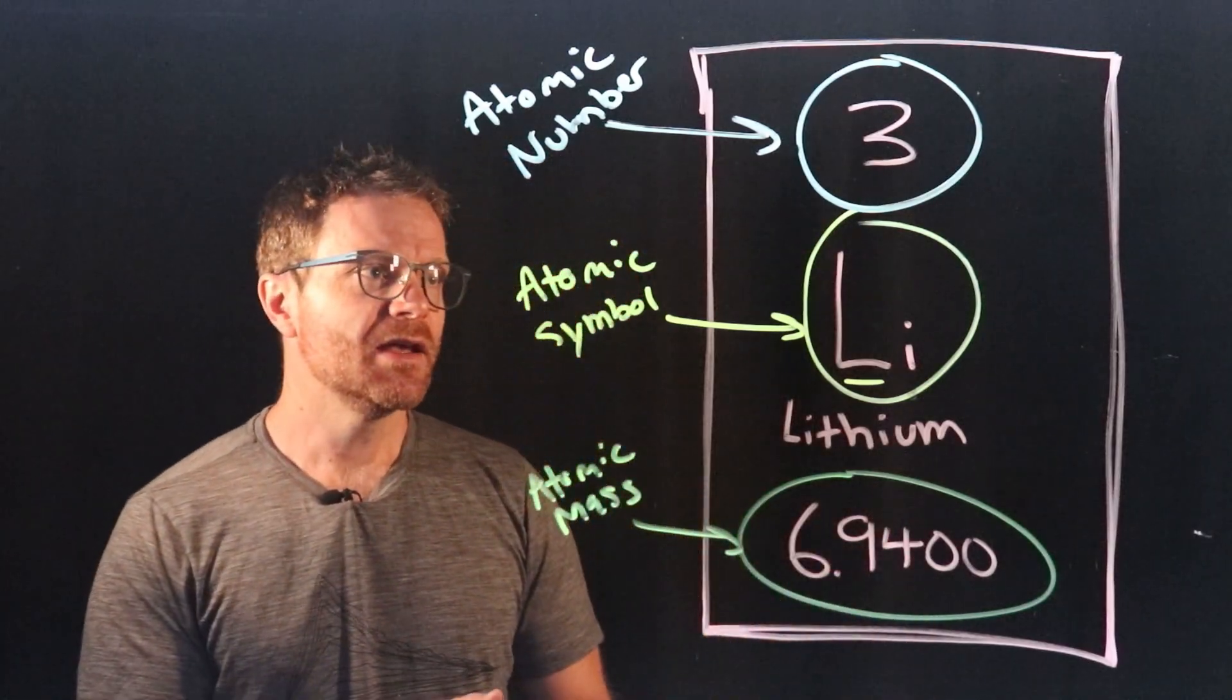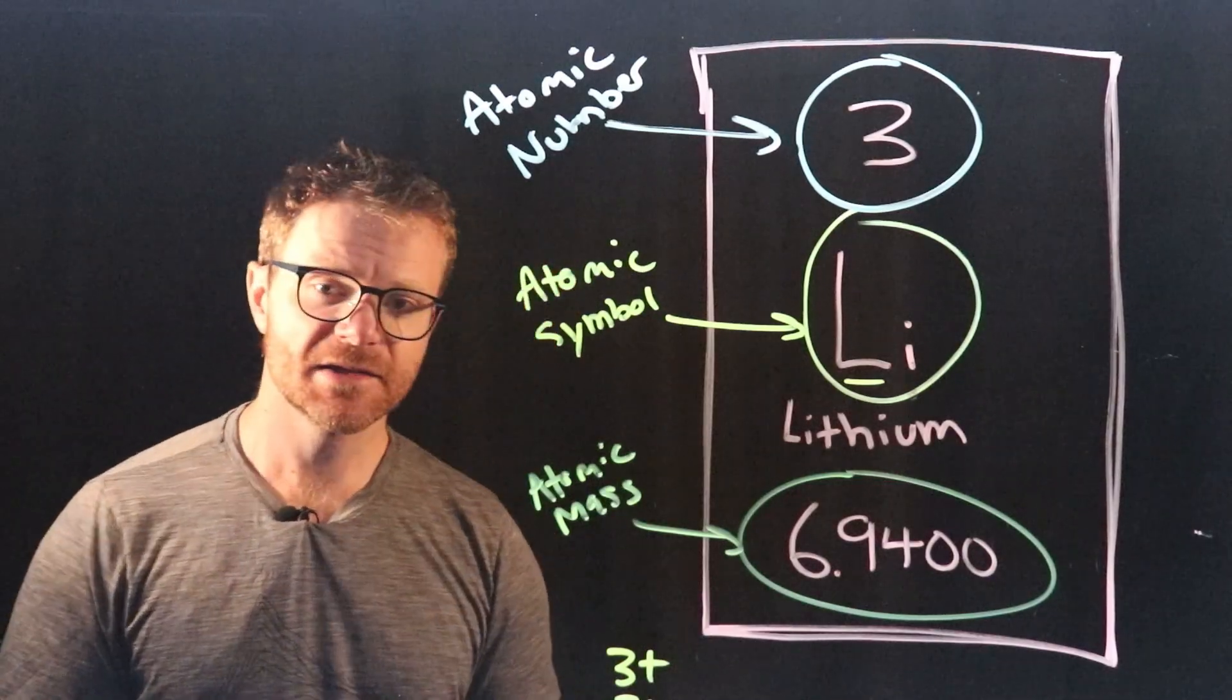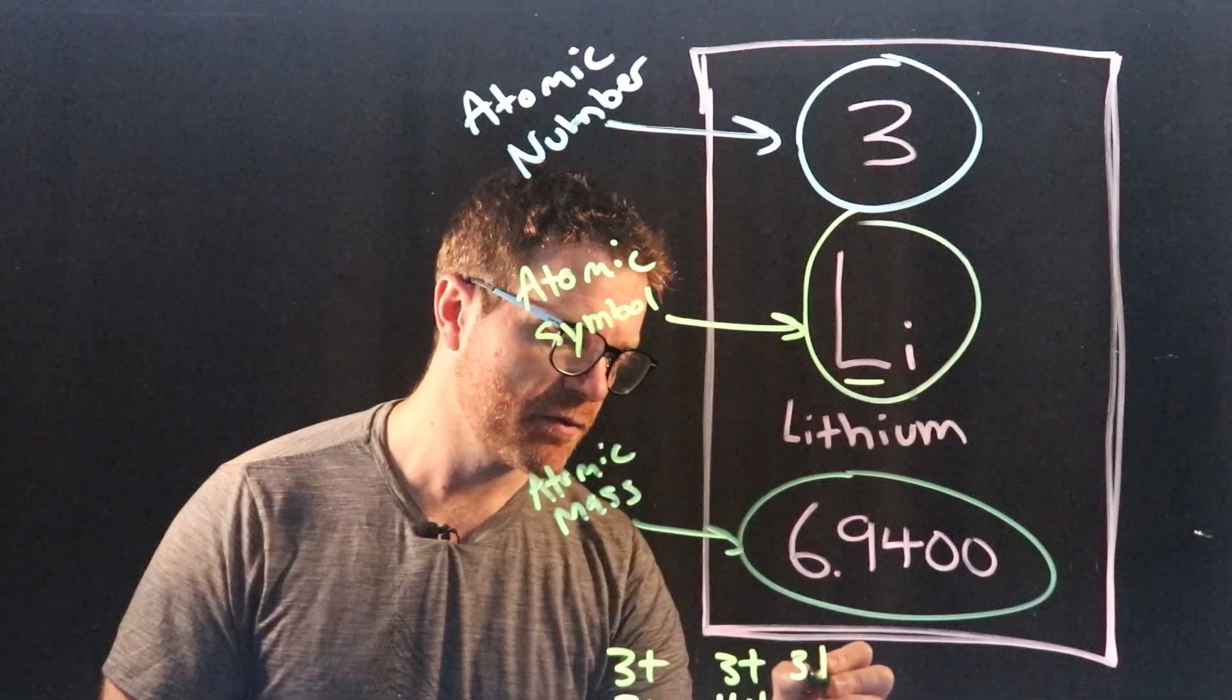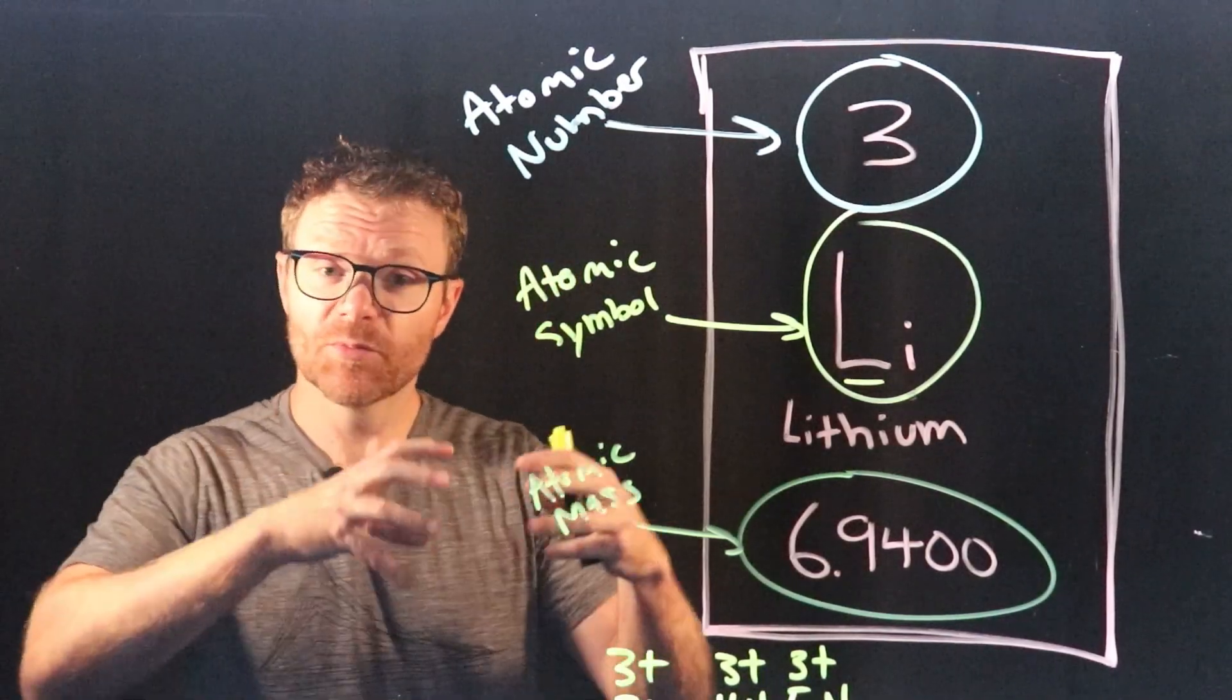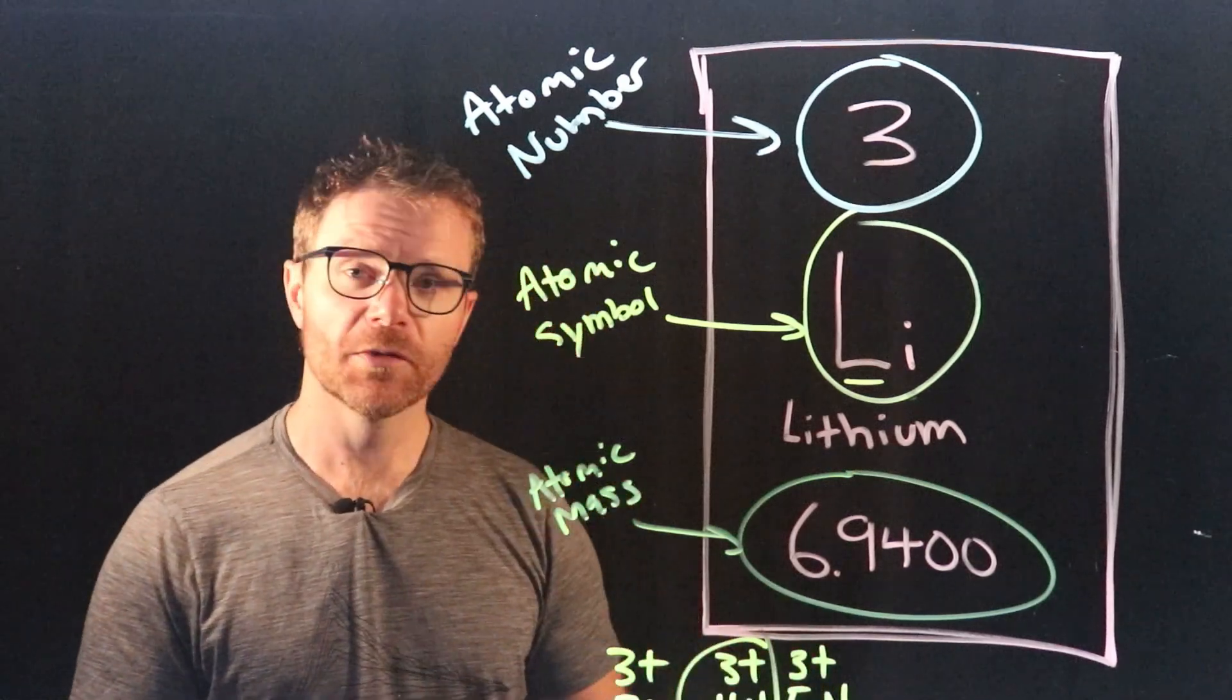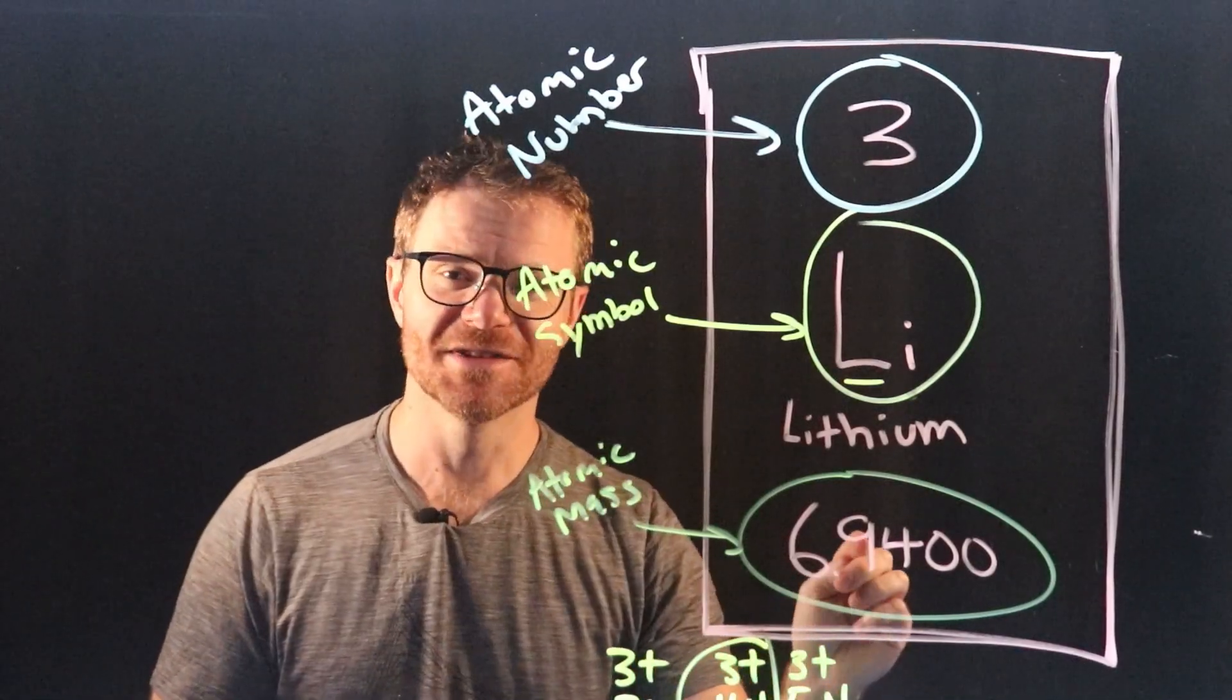So what this number is really saying is that there are some versions of lithium that have three protons in the nucleus and three neutrons for a total atomic mass of six. There are other ones that have three protons in the nucleus and four neutrons for an atomic mass of seven. Maybe there are some that have three protons in the nucleus and five neutrons for a total atomic mass of eight. And if you took the relative proportion of all these different isotopes and average them together you would get this number. So which one of these is most common? Well seven, the one with four neutrons. Because this number 6.94 is really close to seven.